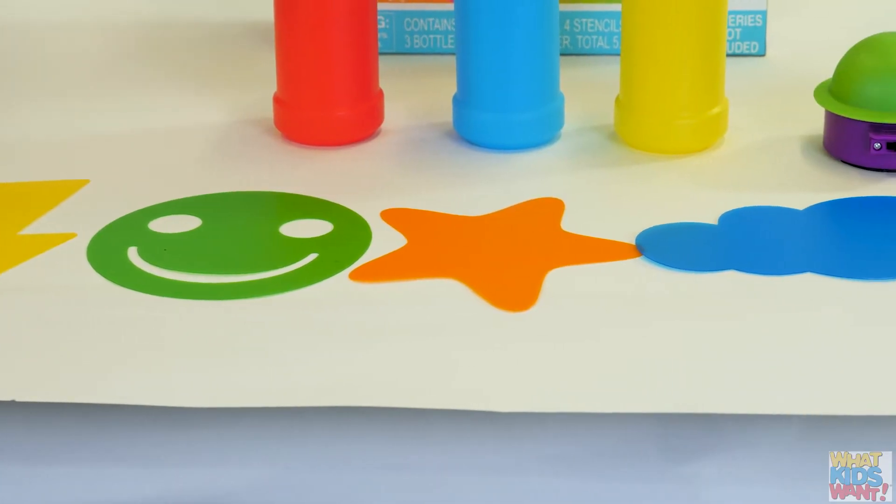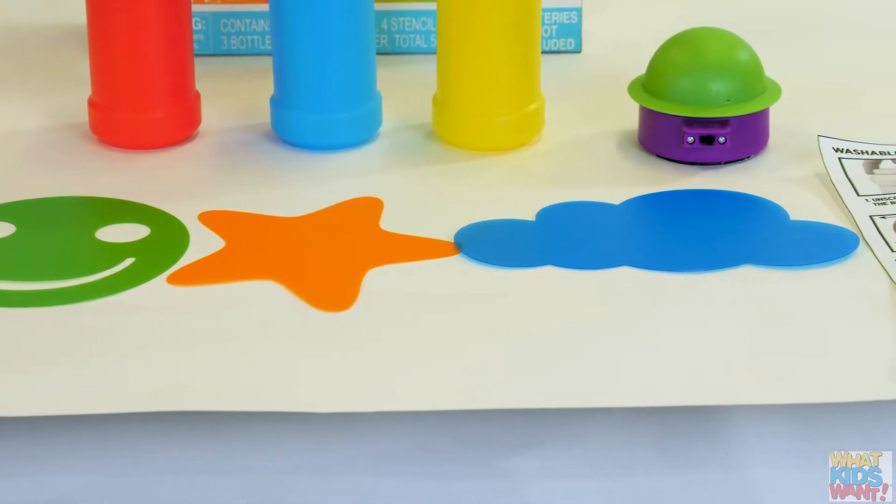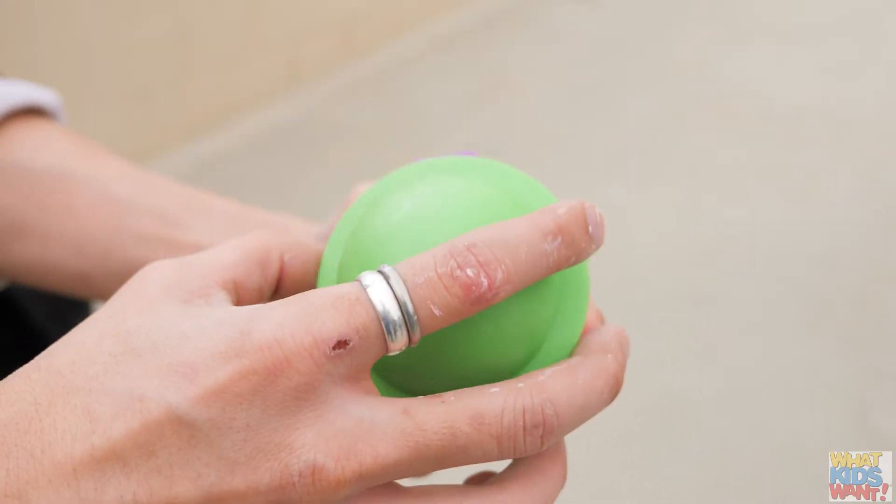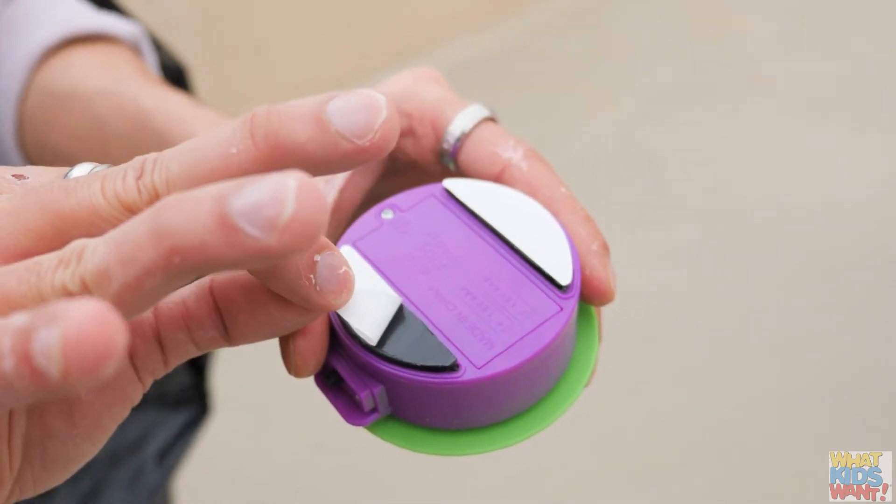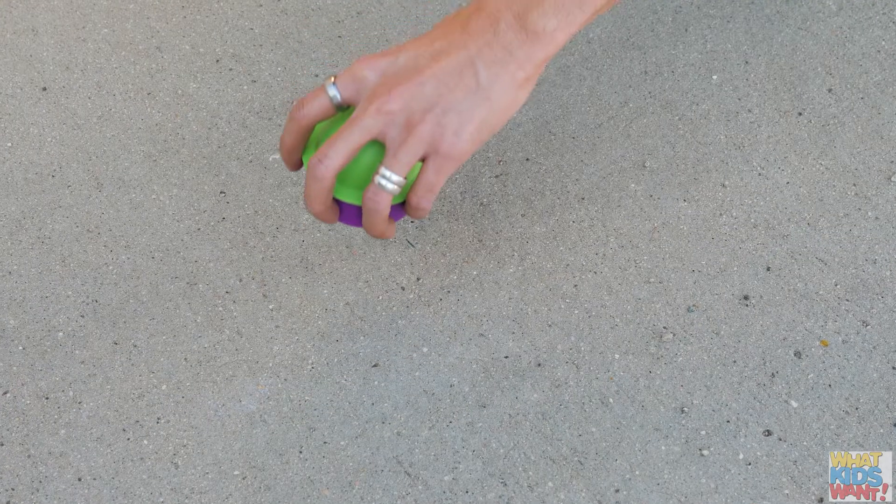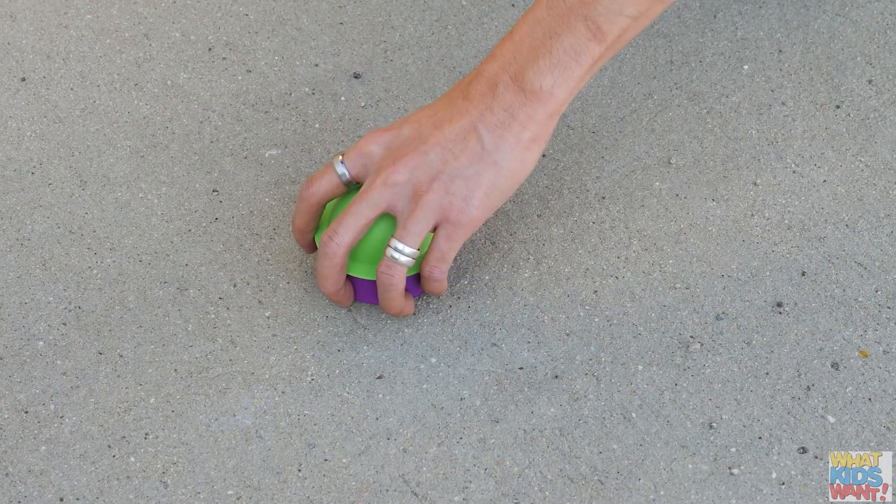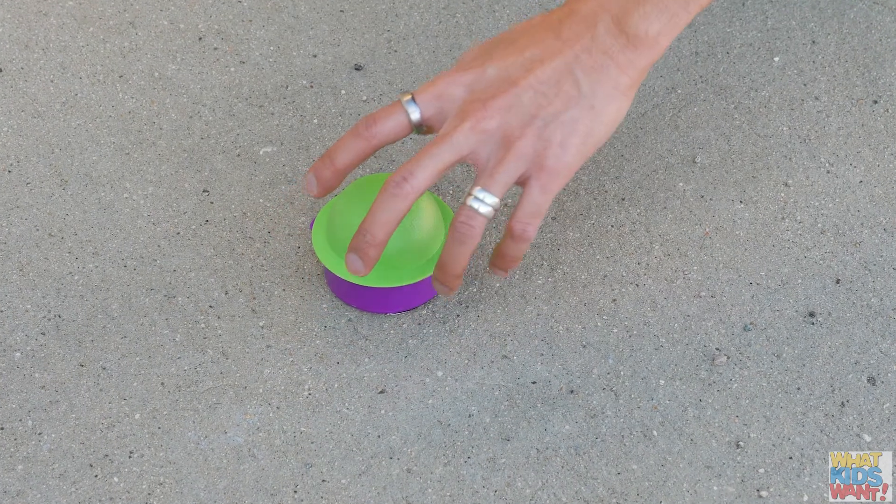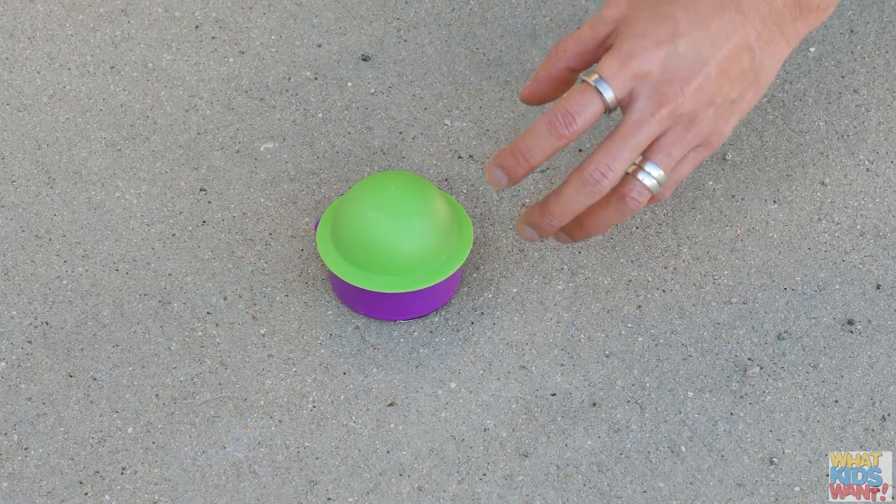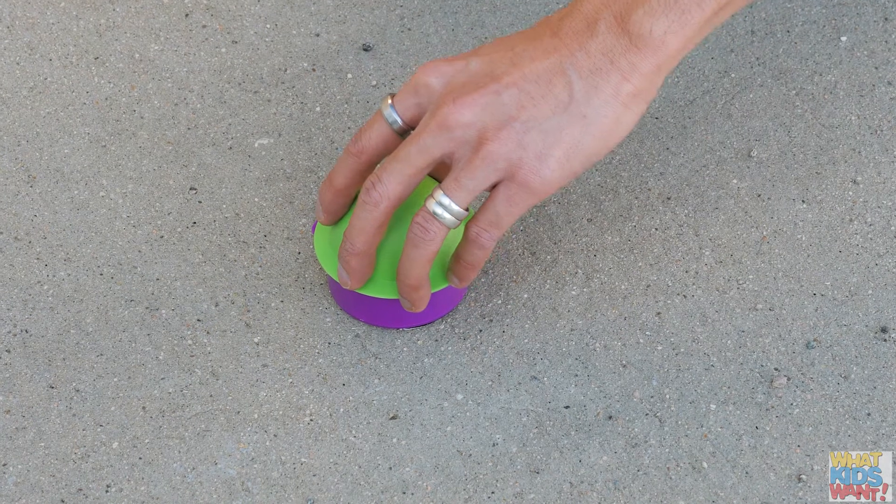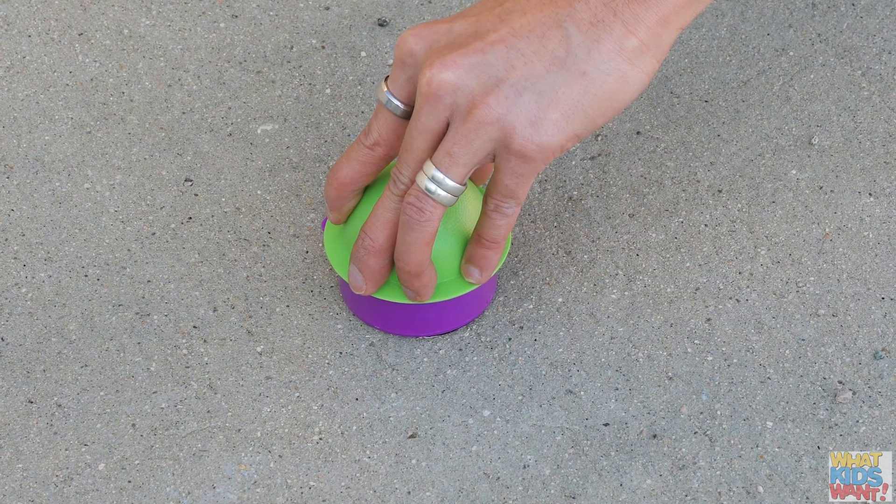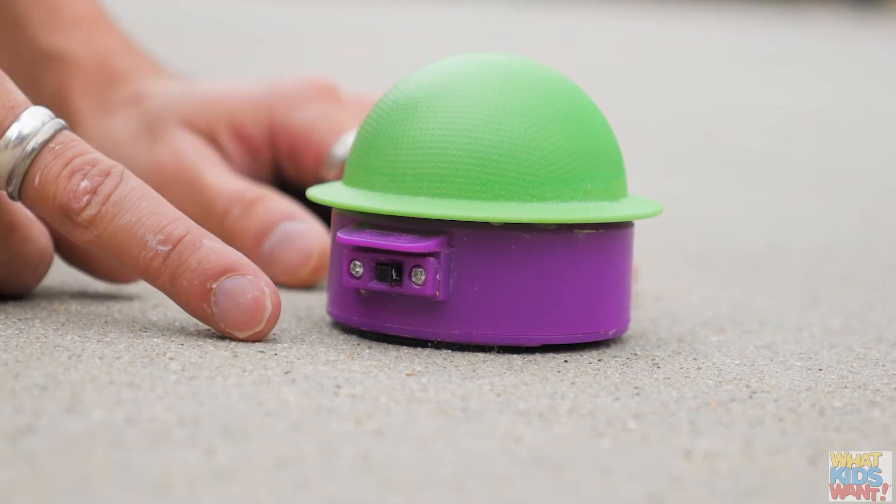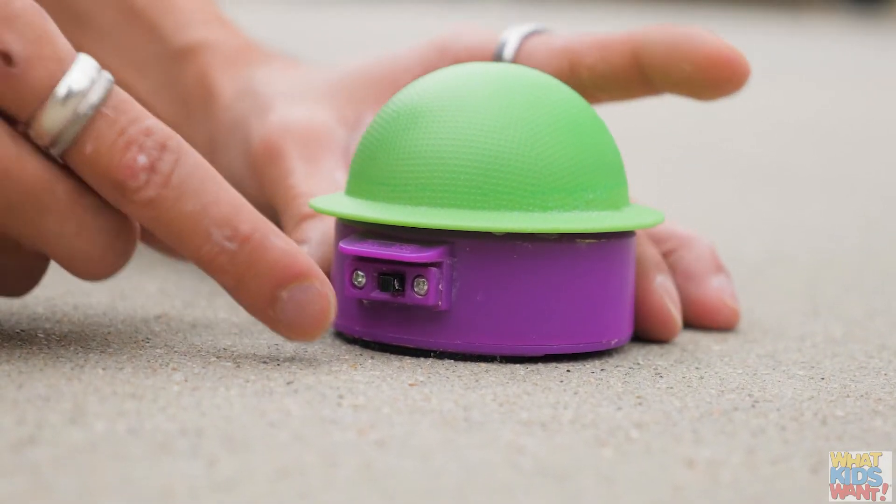We are now ready to create fun and colorful patterns. Remove the protective paper from the bottom of the unit. Place the chalk spinner on level ground that is a minimum of four feet in diameter. Gently press down on the chalk spinner unit to hold the foam pad at the bottom in place. This will keep the chalk spinner from vibrating and moving.